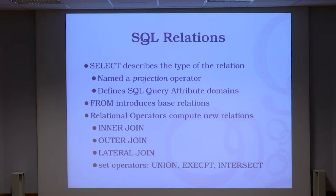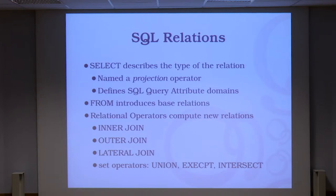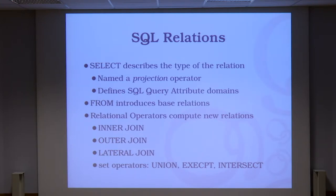In a SELECT query, the SELECT clause is the projection — it describes the output and defines the attribute domain. FROM introduces base relations, but the FROM can also be a subselect because the output of a SELECT is a relation. And what can you do between relations? You can join them with INNER, OUTER, and other kinds of joins. Who knows the difference between inner and outer join? Who knows about lateral join? You can also do set operations with relations — the main difference from a mathematical set is that relations can have duplicates.